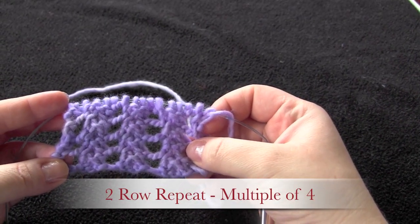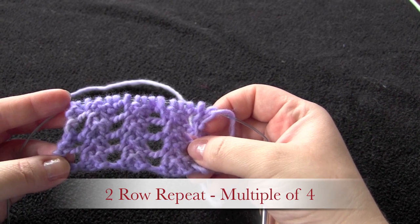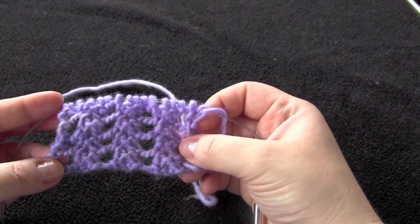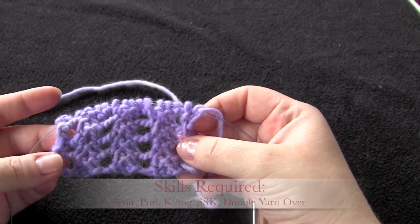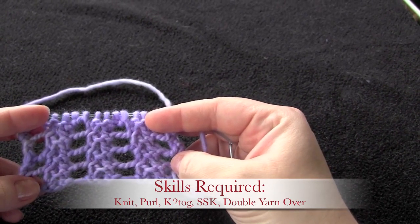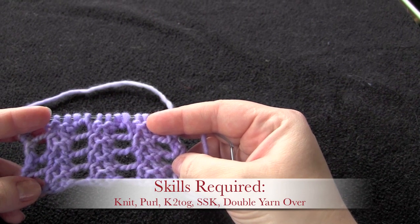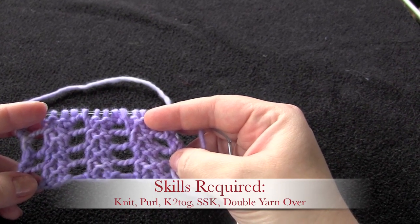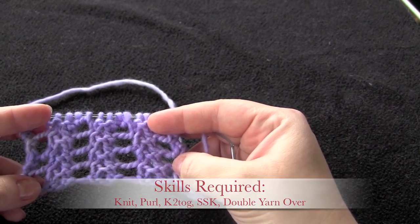This is a two-row repeat worked on a multiple of four. I have 16 stitches for this sample, and for this stitch you will need to know how to knit, purl, knit two together, slip slip knit, and work a double yarn over.